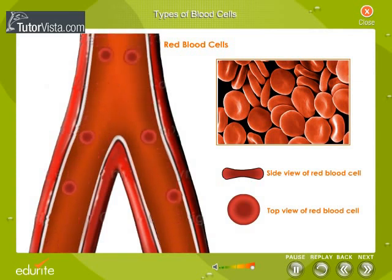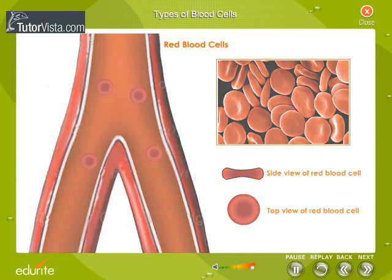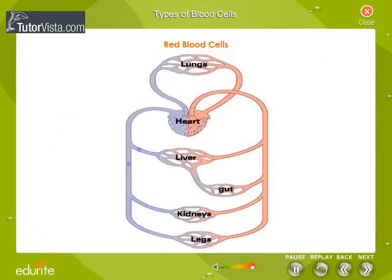RBCs make up about 45% of blood. A single drop of blood contains millions of red blood cells, which are constantly travelling through our body, delivering oxygen and removing carbon dioxide. RBCs collect oxygen from the lungs and carry it to cells all over the body. In turn, they transport carbon dioxide from cells back to the lungs.